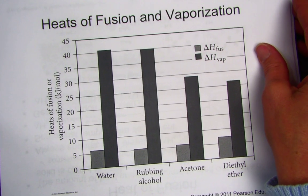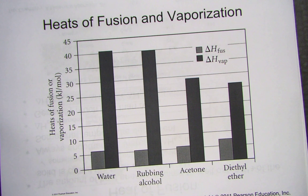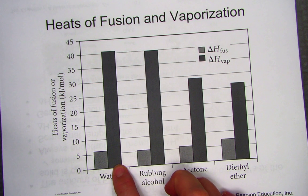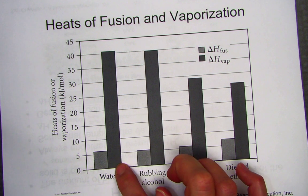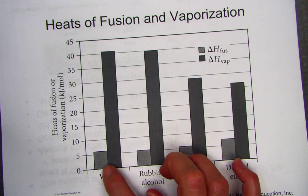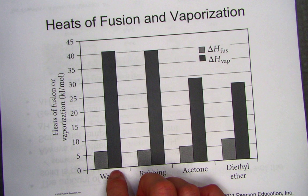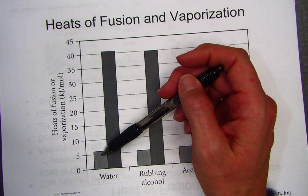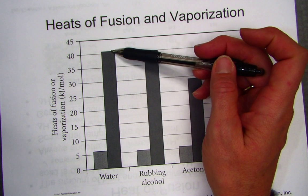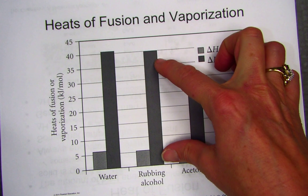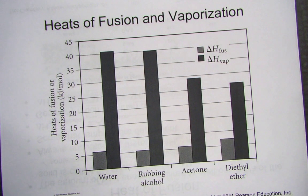Comparing heats of fusion and vaporization: heat of fusion is how much energy it takes to go from solid to liquid, while heat of vaporization is how much energy it takes to go from liquid to gas. It takes much more energy to cause the liquid-to-gas phase change than solid-to-liquid, because the molecules are really being separated completely. From solid to liquid they're still relatively closely packed, but liquid to gas they are extremely far apart. Compare 6.02 kilojoules per mole for water's heat of fusion to 40.7 kilojoules per mole for water's heat of vaporization — and this is true for every compound, not just water.